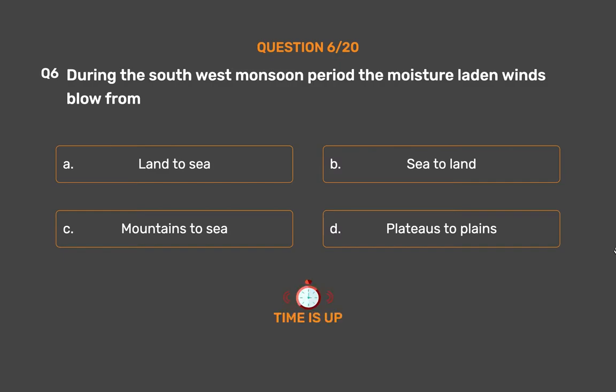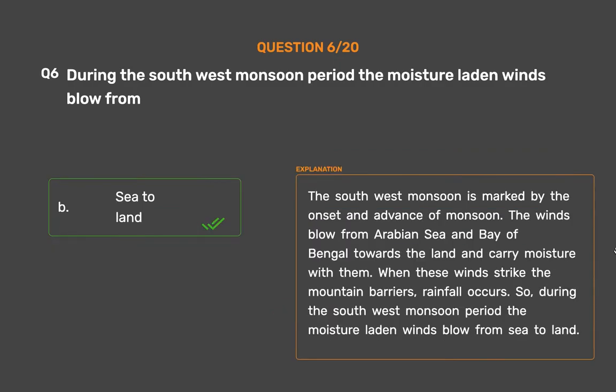The correct answer is Option B: Sea to land. The southwest monsoon is marked by the onset and advance of monsoon. The winds blow from the Arabian Sea and Bay of Bengal towards the land and carry moisture with them. When these winds strike the mountain barriers, rainfall occurs. So, during the southwest monsoon period, the moisture-laden winds blow from sea to land.